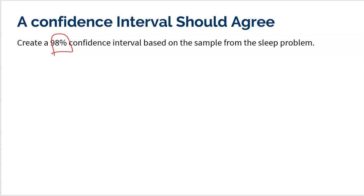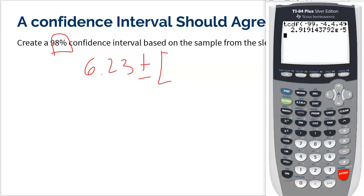So remember, we already checked the conditions and all that stuff. I'm just going to do the confidence interval. So I'm going to take the 6.23. I'm going to go up and I'm going to go down a T star for 98% confidence. So let's grab our calculators here.